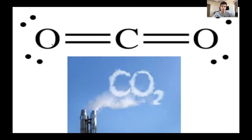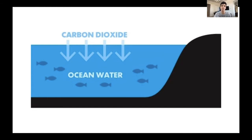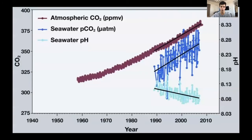The ocean absorbs about half the CO2 we have produced, which is beneficial because it limits the amount in our atmosphere. However, as the Earth is warming due to global warming, there is less CO2 being picked up by the ocean, and the CO2 that is in the ocean is causing a lot of problems for the sea creatures and the coral reefs.